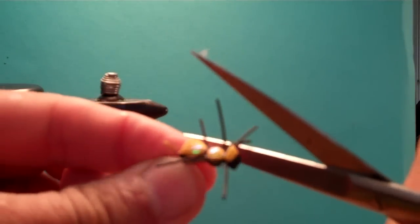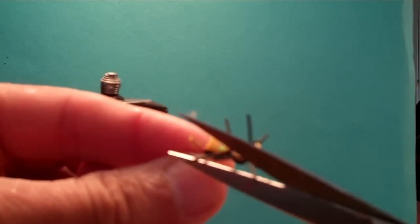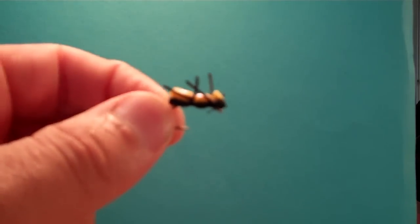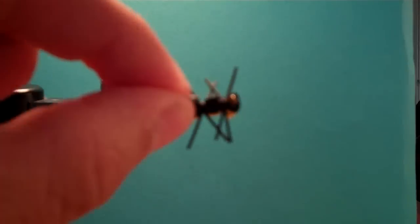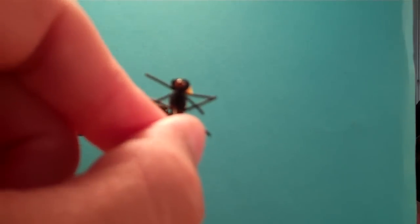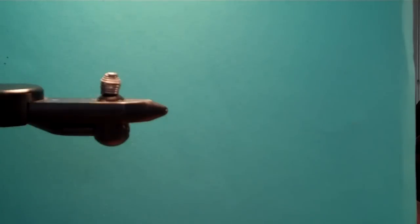Alright, so if those legs are a little long all you do is just trim them. That right there my friends is one fantastic fly. That's the fish's eye view. Terrestrial for summertime.